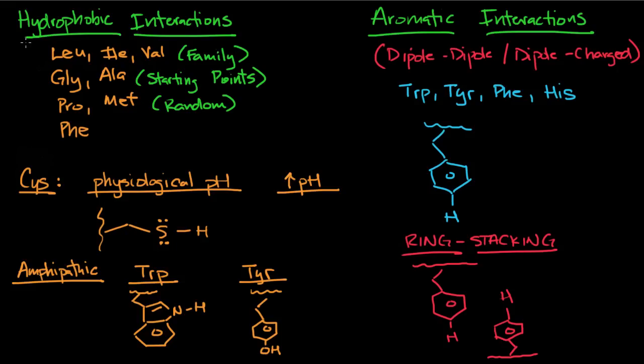So in terms of hydrophobic interactions, the hydrophobic residues, if you remember the way that I organized everything, we have the family which is Leu, Ile, and Val. We have the starting point amino acids from which all the other amino acids are derived, which is glycine and alanine. Glycine just has the H, alanine has the methyl, and then to get all the other amino acids you pretty much just change around what the methyl is, what's attached to the methyl.